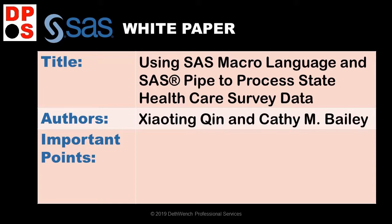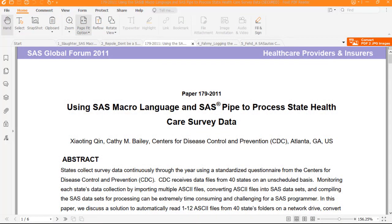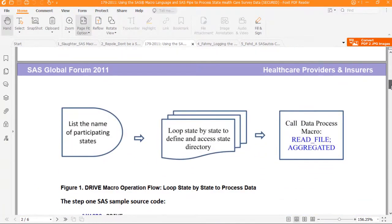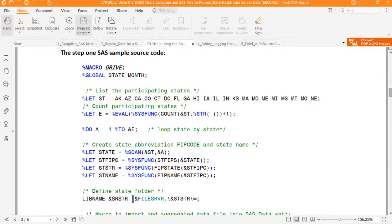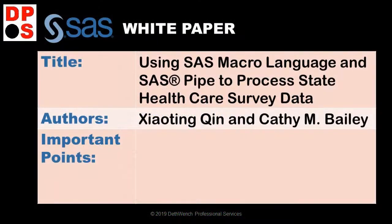The next paper is Using SAS Macro Language and SAS Pipe to Process Data by Chin and Bailey. If you are moving big health data sets around like the people at the CDC in Atlanta, you are often moving from environment to environment — not just internal data steps, but piping data from system to system. They explain it with a diagram and show the macro they are using, demonstrating how to run macros across pipes and move data around from environment to environment.